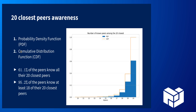One of the key properties of the Kademlia DHT is that a node is supposed to have the 20 closest peers to itself in its routing table, for routing correctness. Given the high churn rate, we don't expect 100%, since nodes are constantly entering and leaving the network. Surprisingly, we observed that 61% of peers know all of their 20 closest peers, and 95% of peers know at least 18 out of the 20 closest peers, which is also excellent.